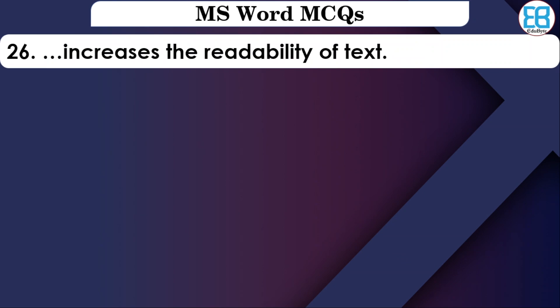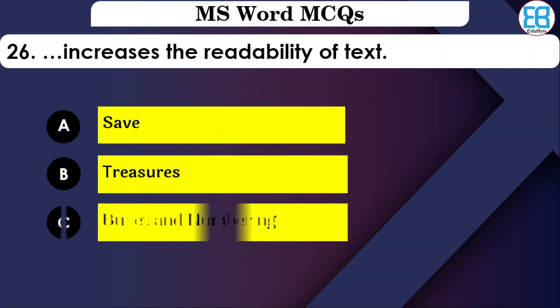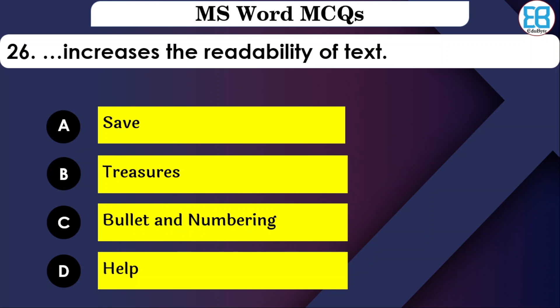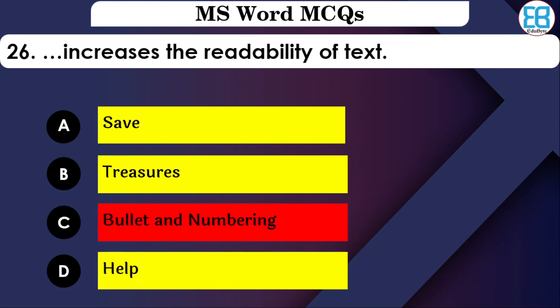What increases the readability of text? The correct option is Bullet and Numbering — using Bullet and Numbering helps increase the readability of paragraph text.